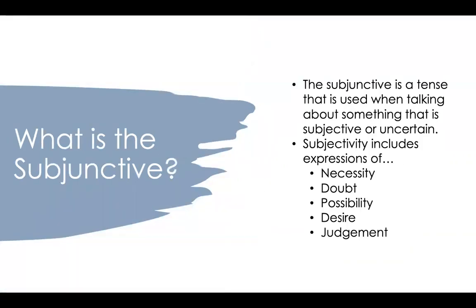So what is the subjunctive? Basically it's a tense used in French when you're talking about something that is subjective or uncertain. There actually is not an English form of this, which is why a lot of people have trouble with this concept. Subjectivity in French includes expressions of necessity, doubt, possibility, desire, as well as judgment.